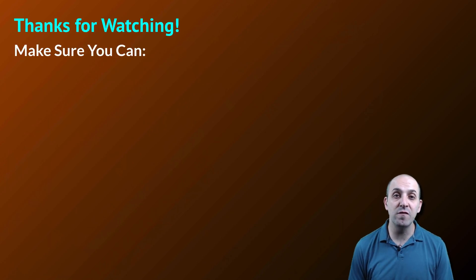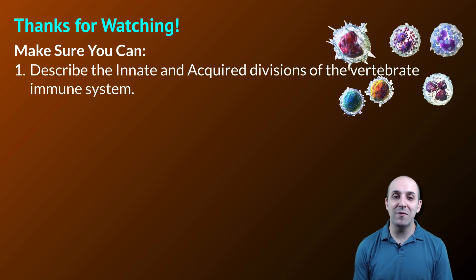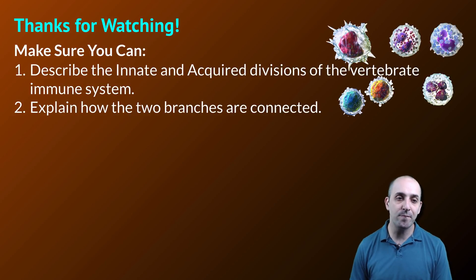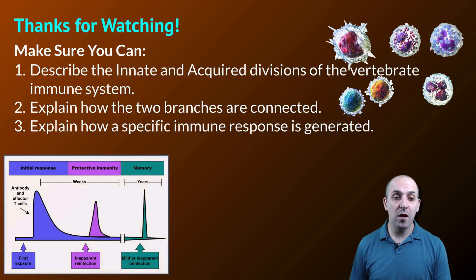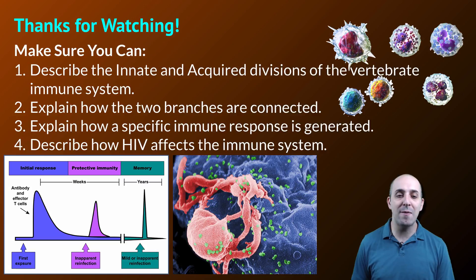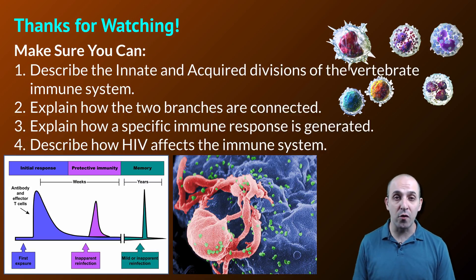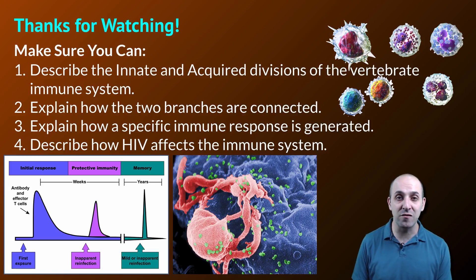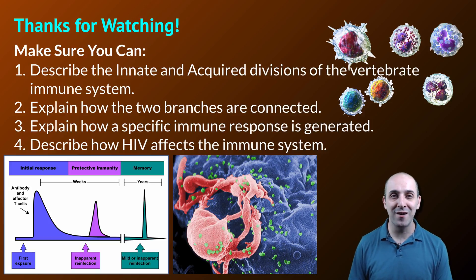Thanks so much for watching our discussion of the immune system. Make sure you can do the following things: describe the innate and acquired divisions of the vertebrate immune system; explain how those two branches of the immune system are connected; explain how a specific immune response is generated and then maintained over time; and describe how HIV affects the immune system. If you can do those things, you're doing great. If not, that's okay too — take a moment to write down any questions you have so you can get the answers you need. Thanks again for watching. Have a great day.